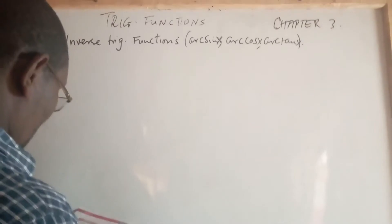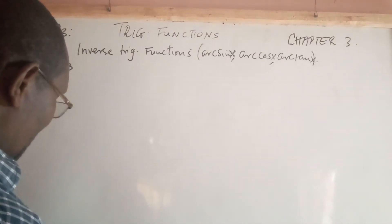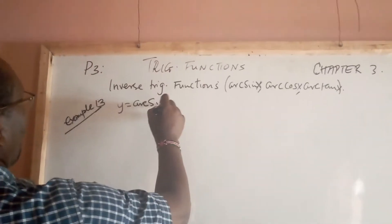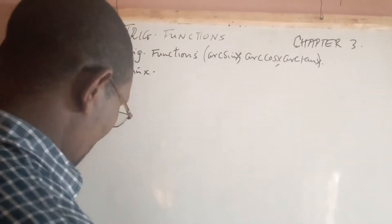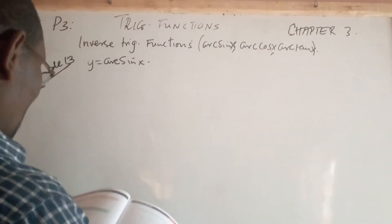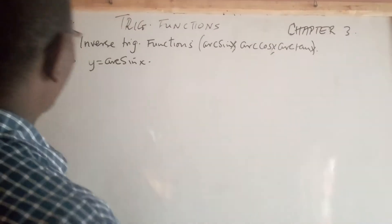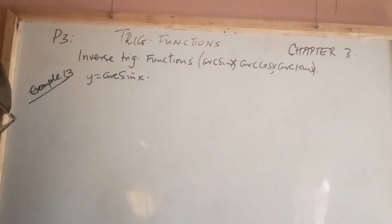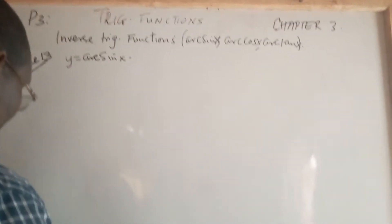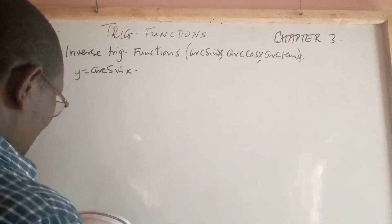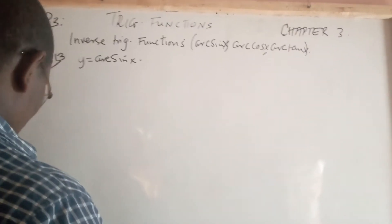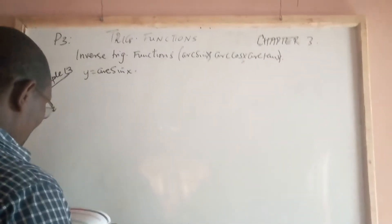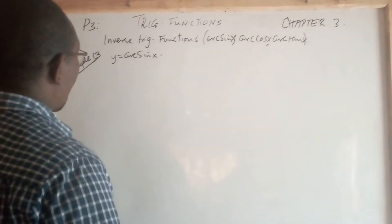On page 62, we are supposed to sketch the graph of y equals arc sine x. Step number one: draw the graph of y equals sine x with a restricted domain of negative 90 degrees, that is negative π over 2, all the way to positive 90 degrees, or positive π over 2. Restricting the domain ensures that the inverse function exists, since y equals sine x is a one-to-one function for the restricted domain.